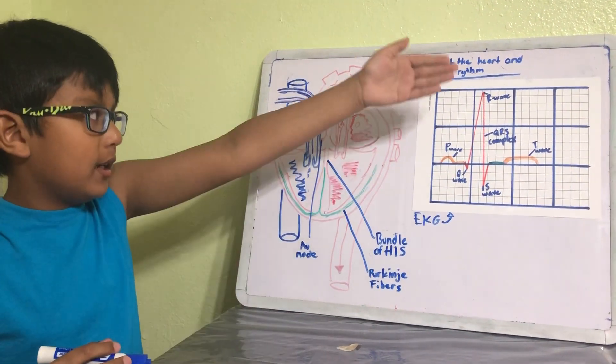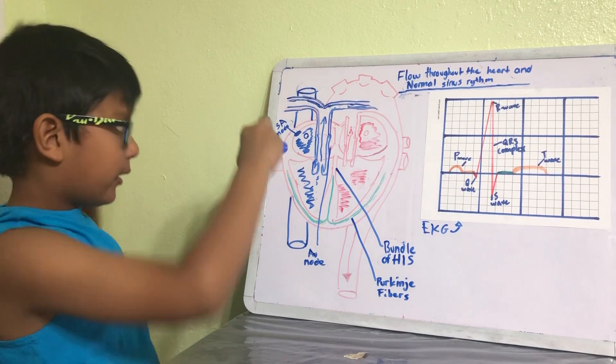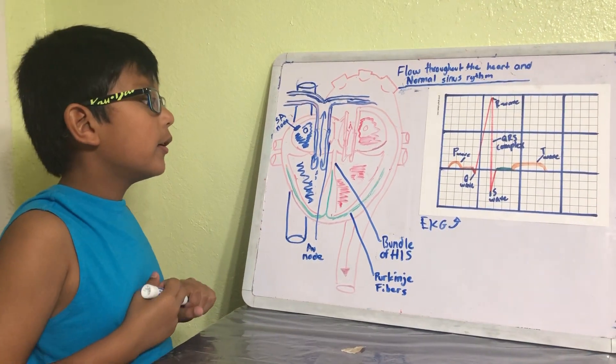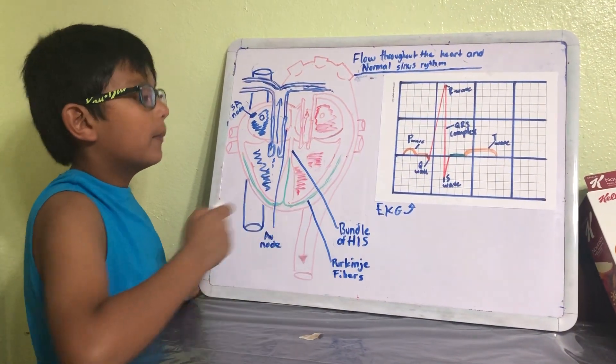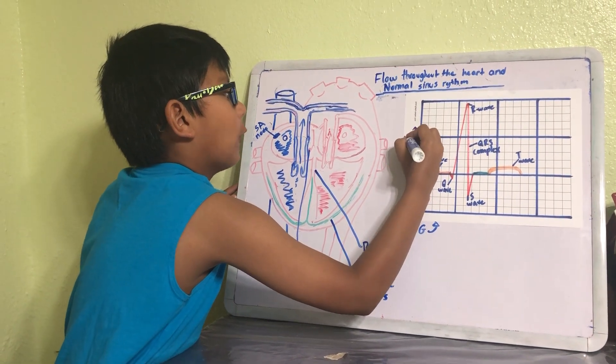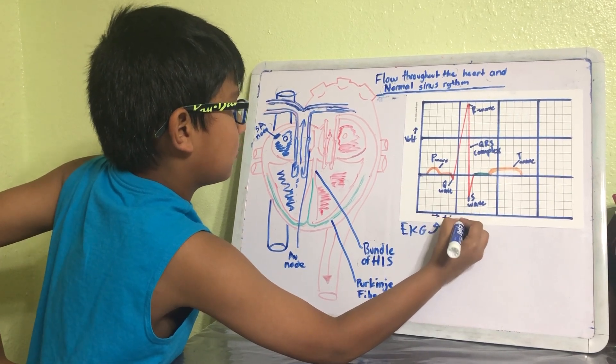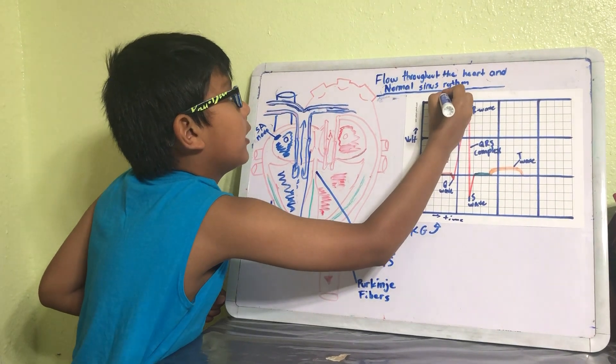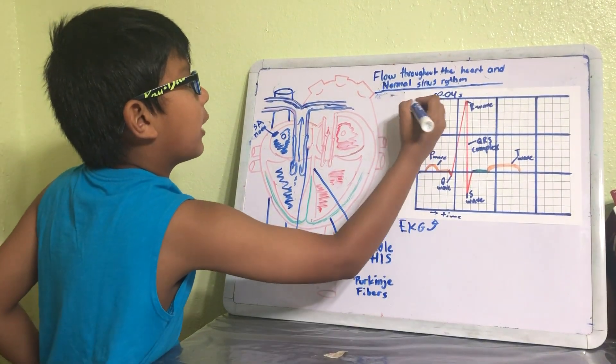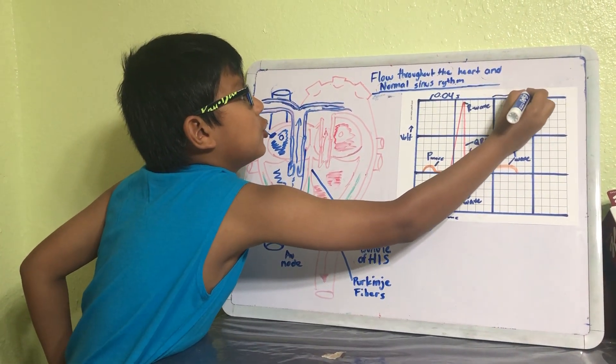Just so you know, this axis is voltage and this axis is time. So each box here represents 0.04 seconds, so you could do the math and figure out that one whole square is 0.2 seconds.